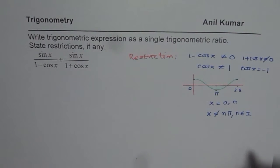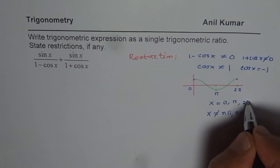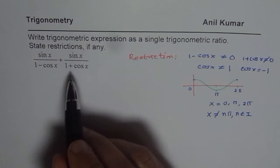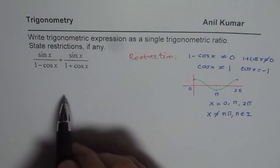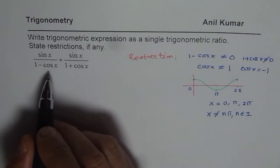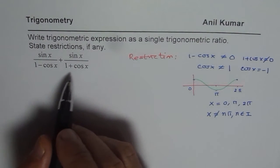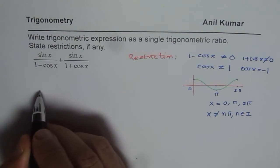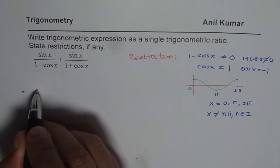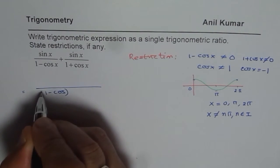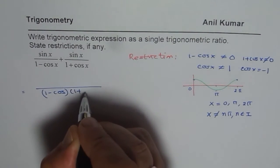So that becomes the general expression — x is not equal to n pi. That is the restriction for the given question. Now let us solve this and write it as a single trigonometric ratio. To do so, we can take a common denominator by multiplying the two denominators, so we write it as 1 minus cos x times 1 plus cos x.